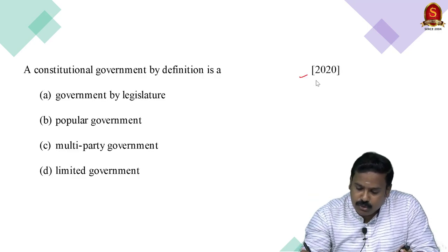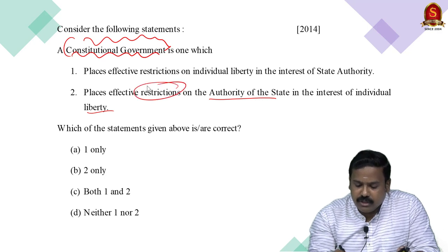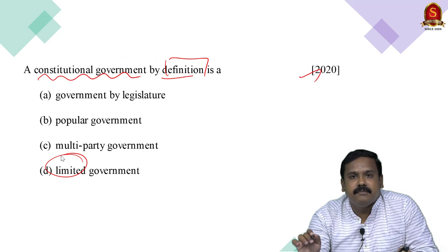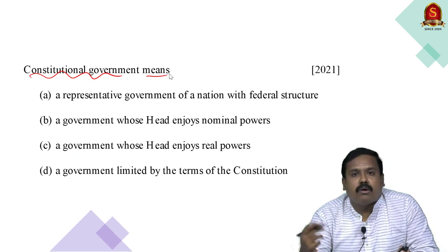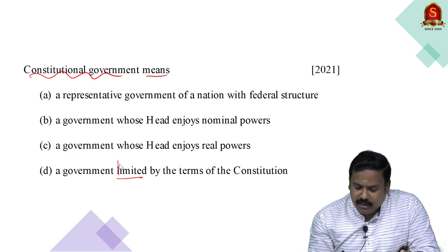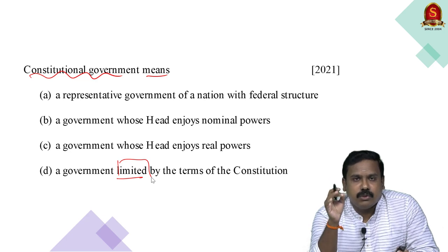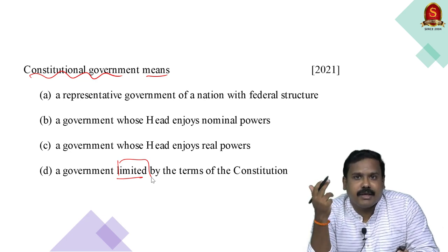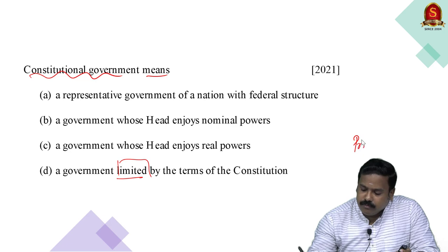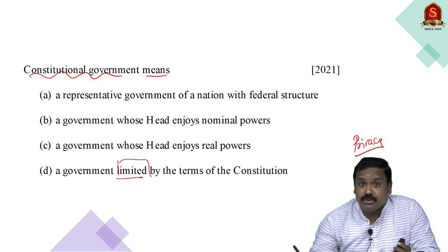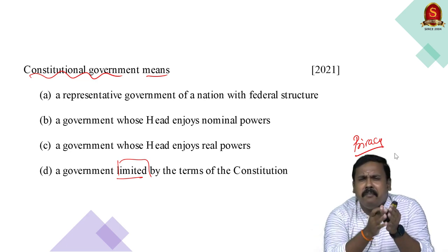That constitutional government question was asked again in 2020 — this time they used the word 'limited' instead of 'restriction.' And in 2021, they asked again: constitutional government means what? The answer: a government which is limited by the terms of the constitution. So one concept — constitutional government — was asked three times within a 10-year period. Similarly, questions related to right to privacy were asked in 2017, 2018, and again in 2020.